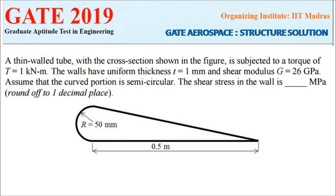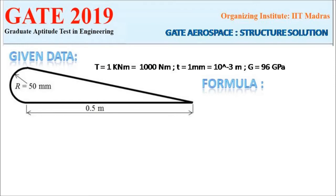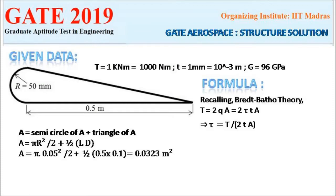We need to find the shear stress in the wall in mega pascal, rounded off to one decimal place. From the given data: torque is 1 kilo Newton meter, converted to 1000 Newton meter; thickness is 1 mm, converted to 10⁻³ meter; shear modulus is 96 GPa, which in pascal is multiplied by 10⁹. Now let's recall the Bredt-Batho theory formula.